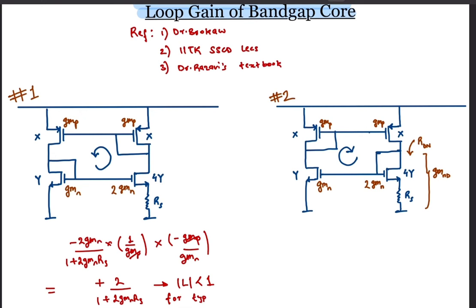Next, let's look at the loop gain of circuit 2. As before, we apply a test voltage and compute the return voltage at the points marked by X. The gain from the NMOS gate to the drain is minus GMN by GMP.